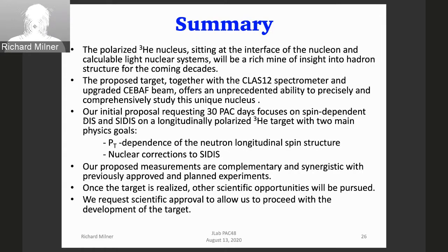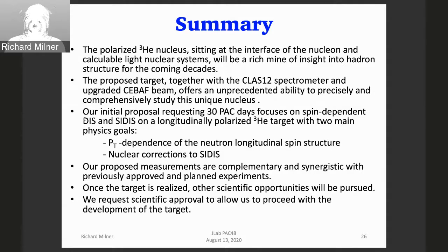Our proposal requests 30 PAC days focused on spin-dependent SIDIS on a longitudinally polarized helium-3 target, with the goals of extracting the PT dependence of the neutron longitudinal spin structure and looking at nuclear corrections to SIDIS — particularly comparison of deuterium and helium-3. The proposed measurements are complementary and synergistic with other approved and planned experiments. What we're requesting is scientific endorsement to proceed with target development. If you give us a favorable review, we would go off and build a target over several years, with no scientific impact on the CLAS12 program until we return with a working target. Thank you.